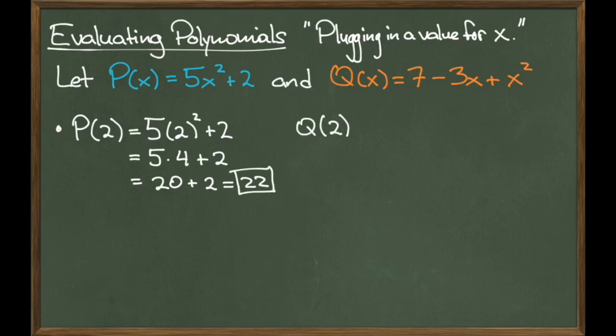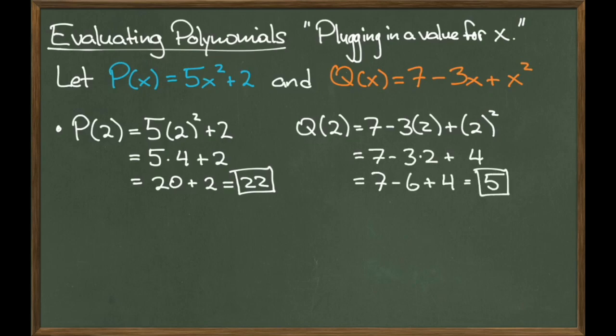Next I will evaluate Q of 2. So the game hasn't changed. Everywhere I see an X in the polynomial Q of X, I just replace it with the 2. Doing this gives 7 minus 3 times 2 plus 2 squared. Following the order of operations, we end up with an answer of 5.